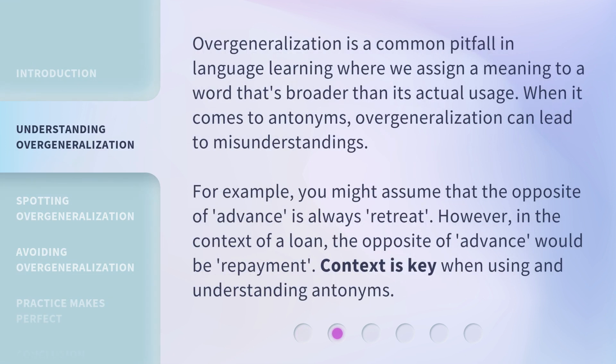Overgeneralization is a common pitfall in language learning where we assign a meaning to a word that's broader than its actual usage. When it comes to antonyms, overgeneralization can lead to misunderstandings. For example, you might assume that the opposite of 'advance' is always 'retreat.' However, in the context of a loan, the opposite of advance would be 'repayment.' Context is key when using and understanding antonyms.